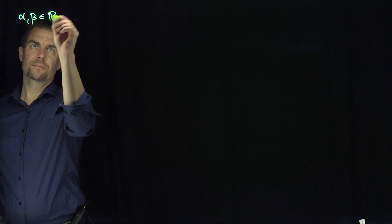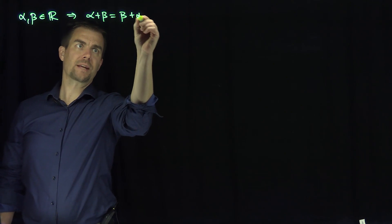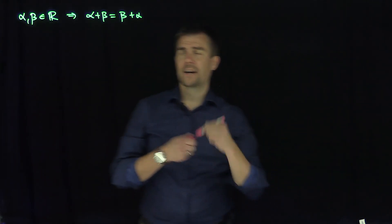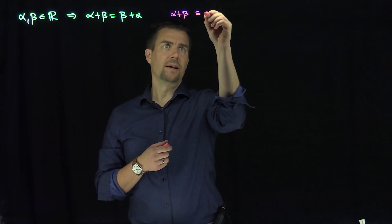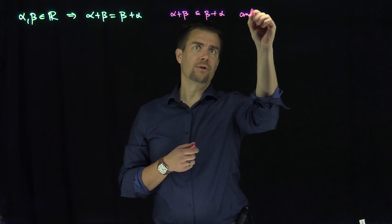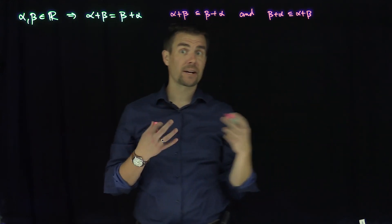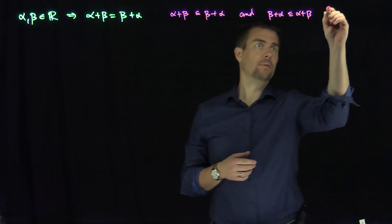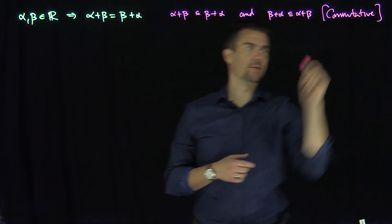First, we're going to claim that if alpha and beta are real numbers, this implies that alpha plus beta is equal to beta plus alpha. Remember that alpha and beta are Dedekind cuts, which means I need to show two things: I need to show that alpha plus beta is contained in beta plus alpha, and that beta plus alpha is contained in alpha plus beta, because these are sets of rational numbers. So we need to prove both of these things to prove that addition is commutative — the commutative property of addition.